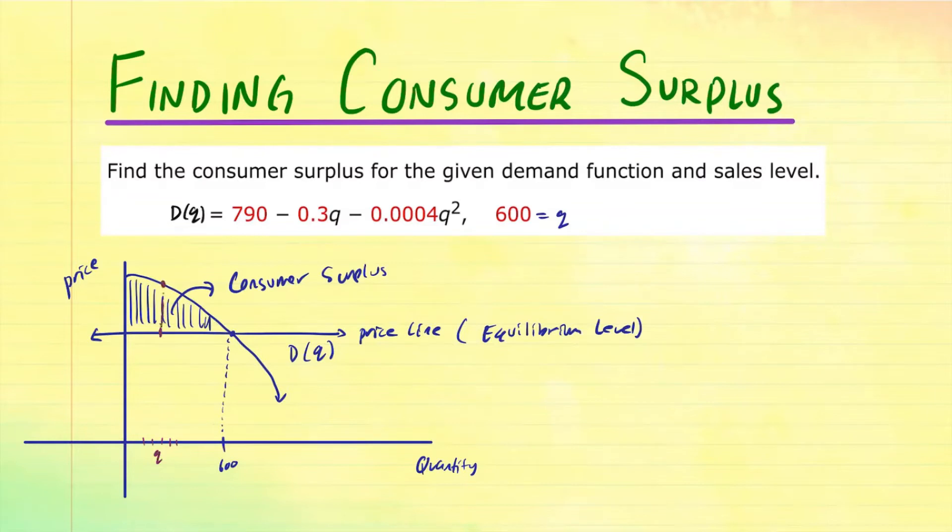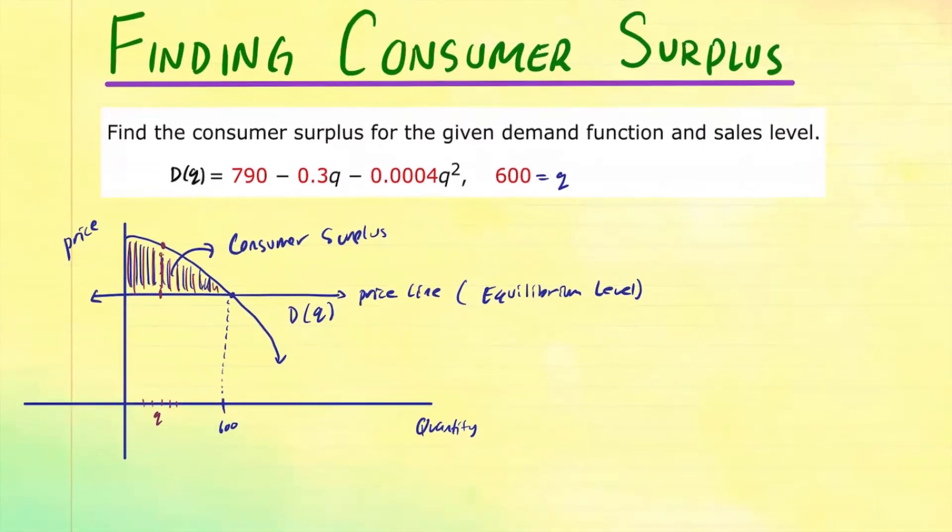So you see the big difference. So we're looking at that, that we want to find what's the area of this, that will be the consumer surplus. And we're going to do that by using definite integral.